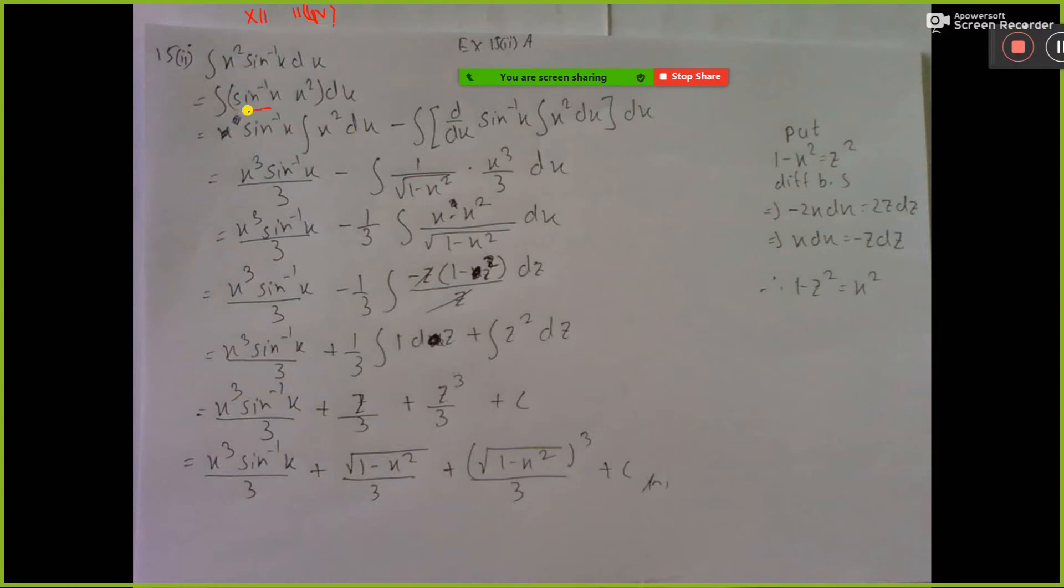So u v dx, so u integration v dx, this is nothing but u integration v dx minus d dx of u, integration v dx total dx.